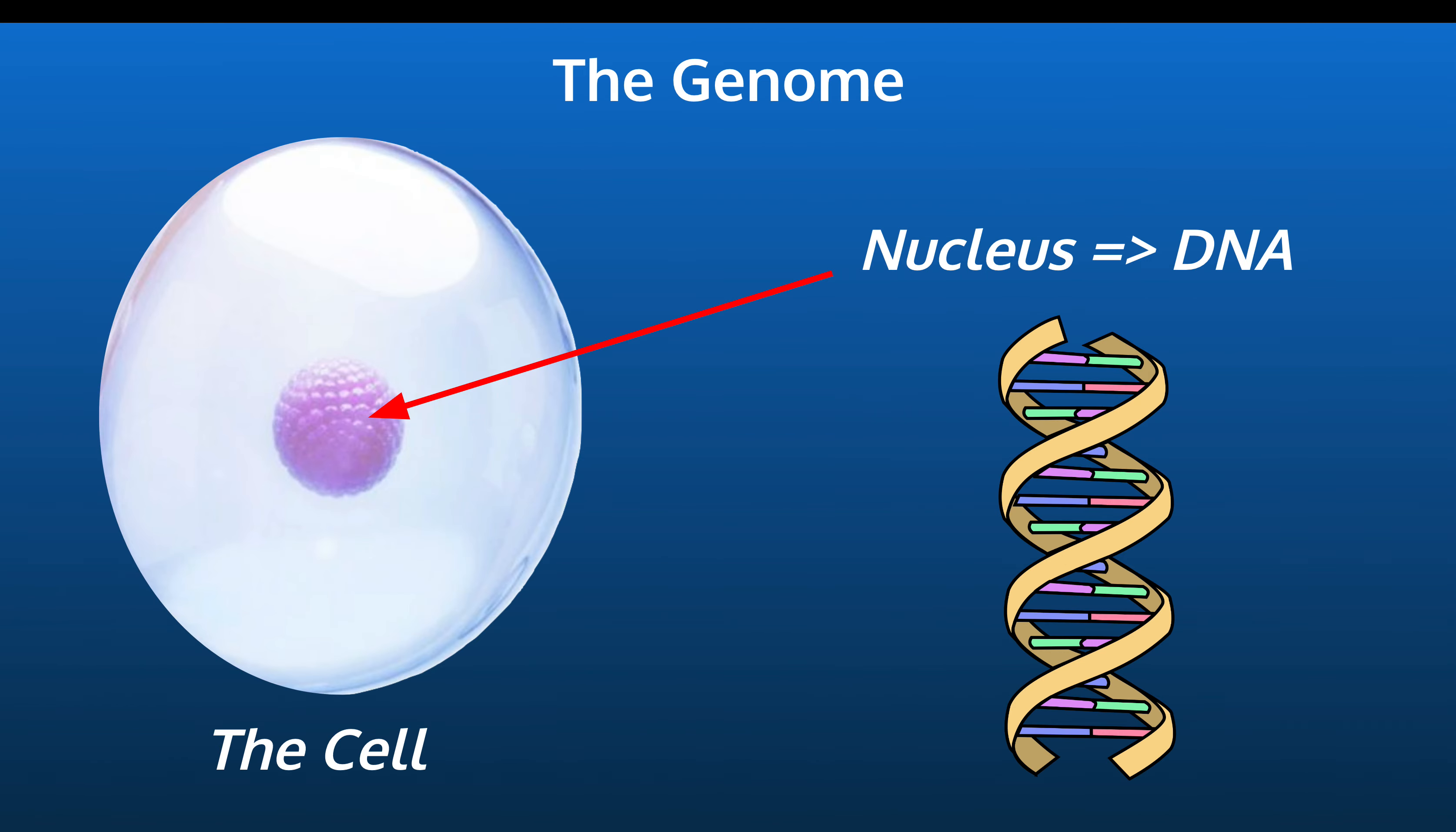I will attach a worksheet in the description where you can practice these complementary base pairing rules. All right. Moving along, we've referred to the DNA in the nucleus. We've shown the structure of DNA, and we've shown that DNA is composed of four base pairs, adenine, thymine, guanine, and cytosine. We collectively refer to all of the DNA in the nucleus as the genome.